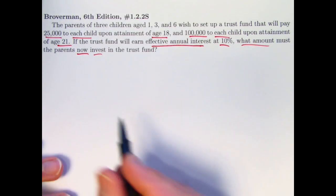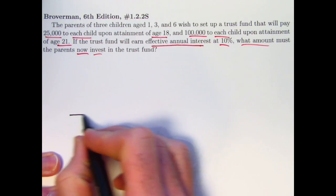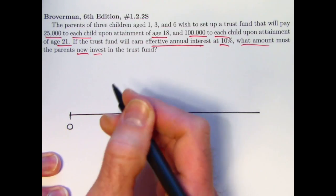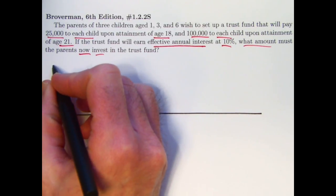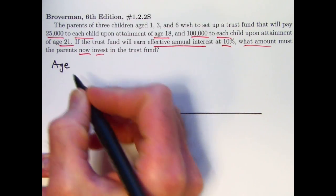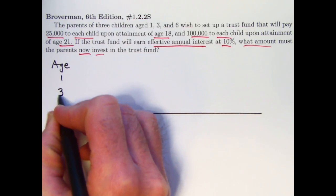So as we will usually do, we'll draw a number line to help us in our thought process, problem solving, to organize things here. You've got these three kids of different ages. You might want to put the age up here. You've got the one-year-old, the three-year-old, and the six-year-old.